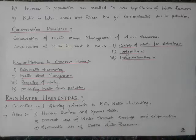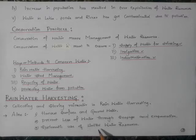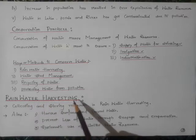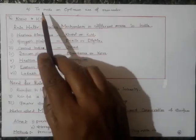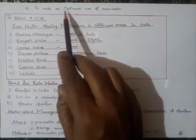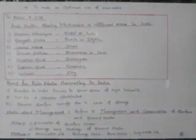The water accumulated is systematically and fruitfully used — systematic use of limited water resources is a key aim of rainwater harvesting. The fourth aim of rainwater harvesting is to make optimum use of rainwater.